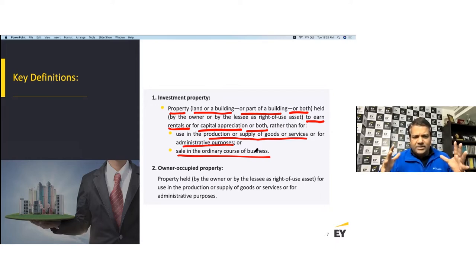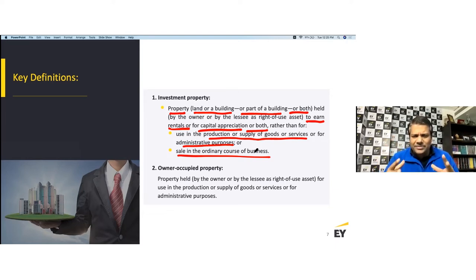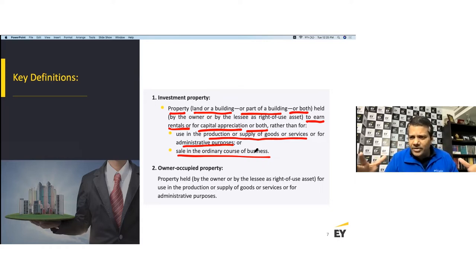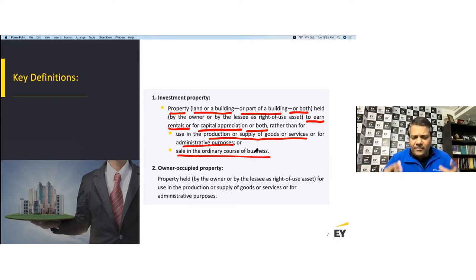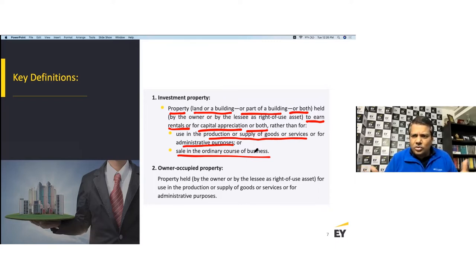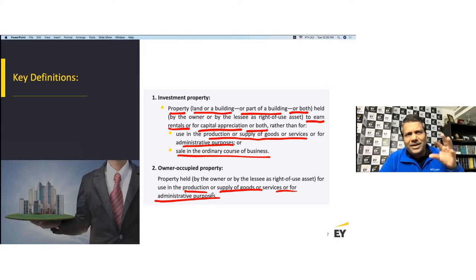The most important concept: investment property is land or building or a combination, held for capital appreciation or for earning rental income. If the purpose is to use it in production or supply of goods or services, it is not investment property. If the purpose is administrative, it's not investment property. If the purpose is to sell in the ordinary course of business, it's also not investment property. Owner-occupied property is used either for production, supply of goods or services, or for administrative purposes.